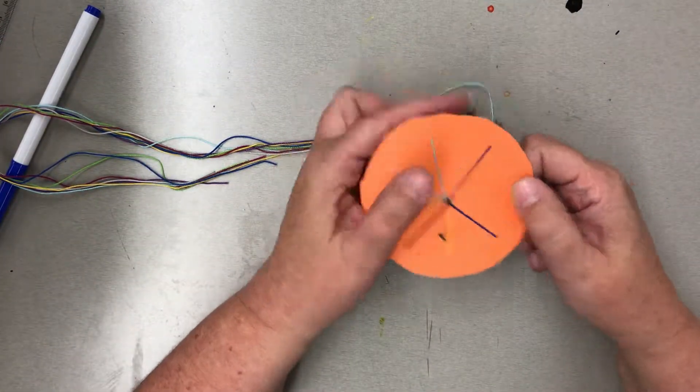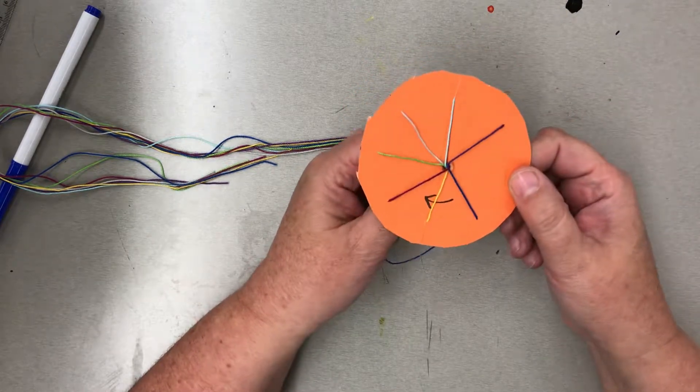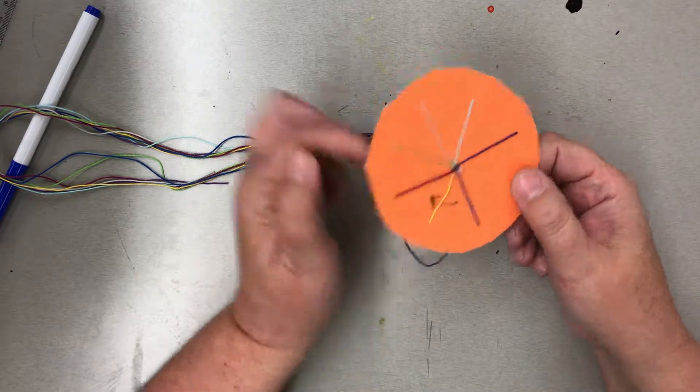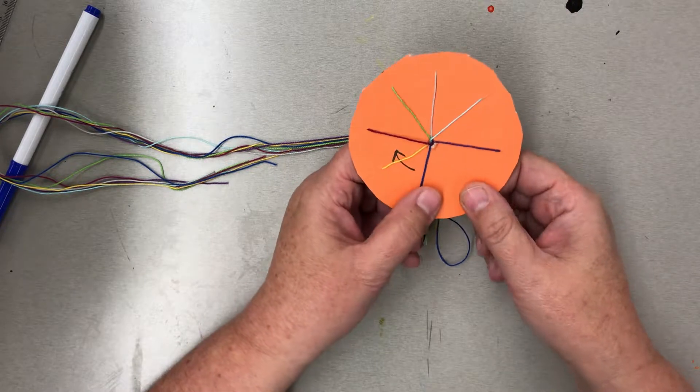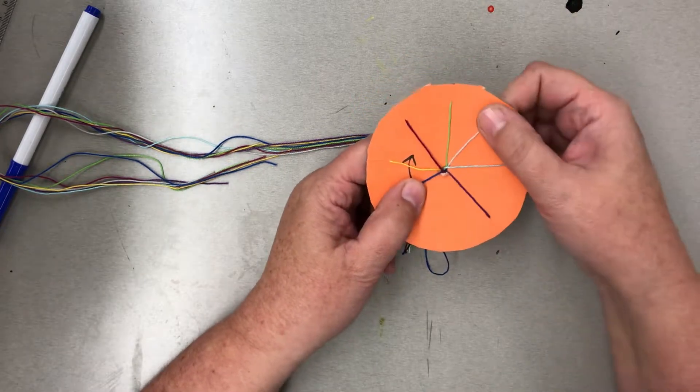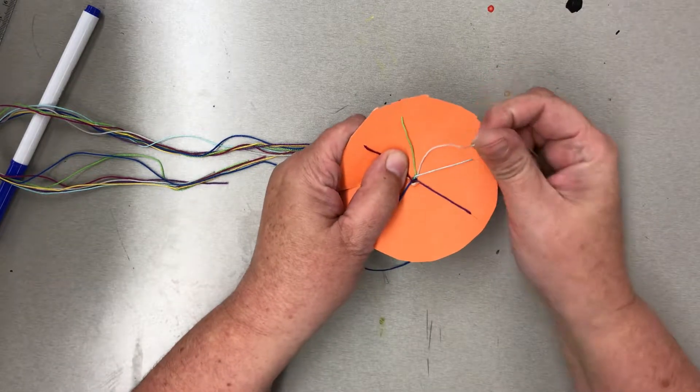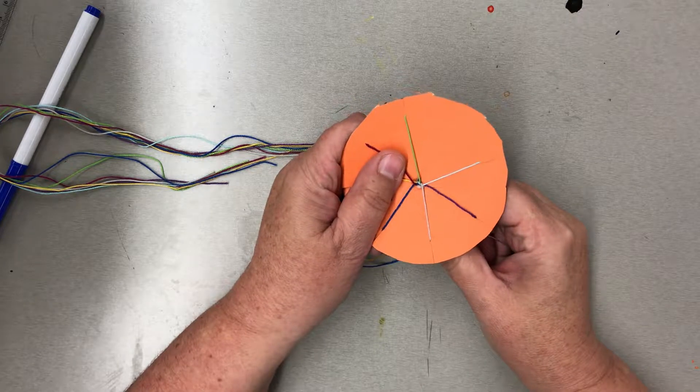Next, you want to think of the empty spot as zero. So this spot right here is zero, and then you're going to count to three. So here's zero, one, two, three. You take the string at slot number three and stick it through number zero.